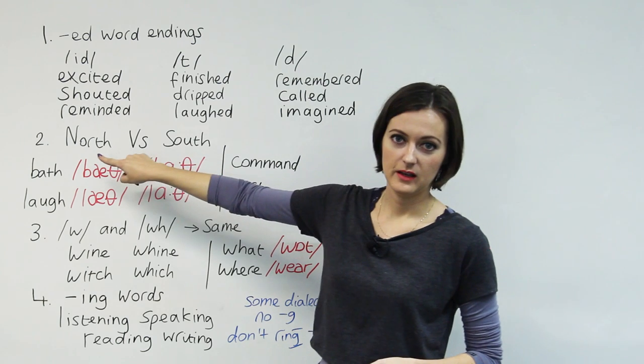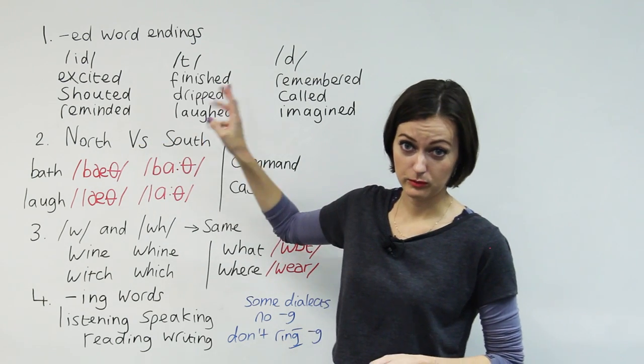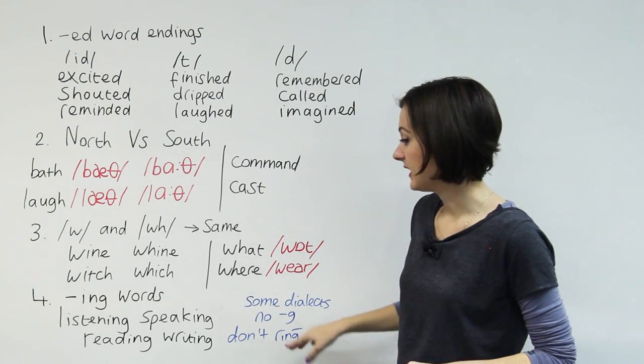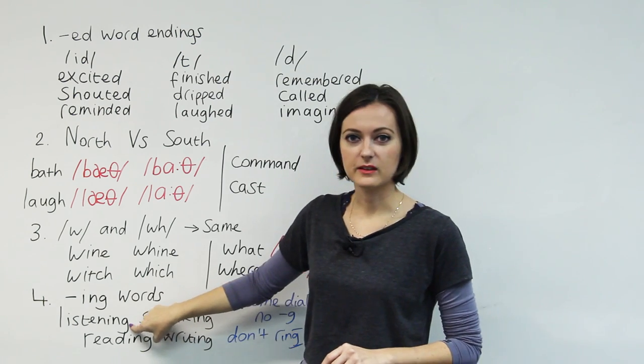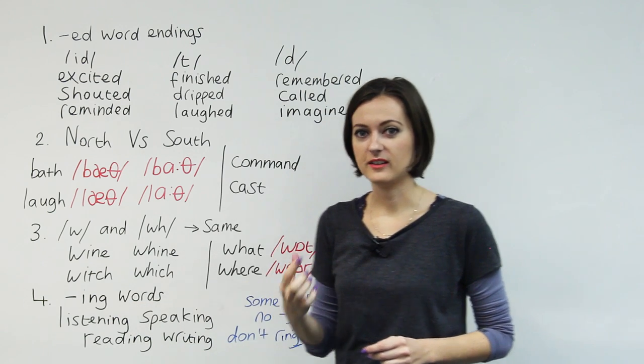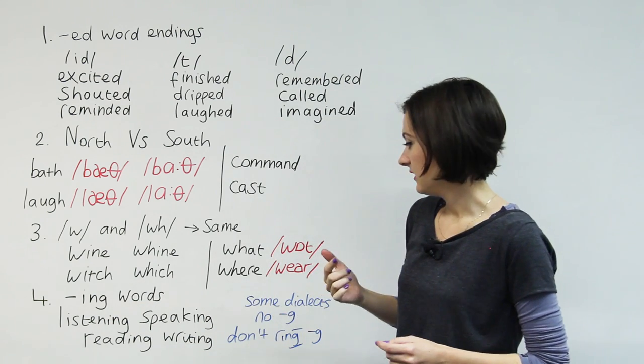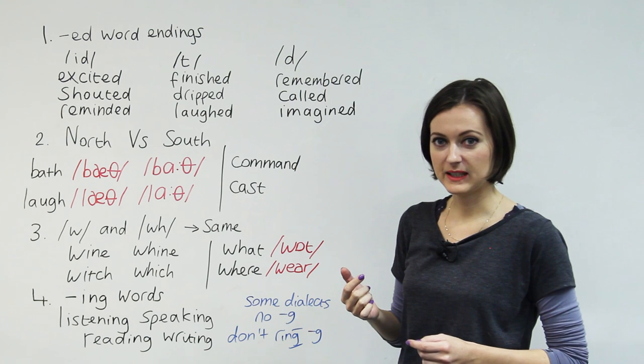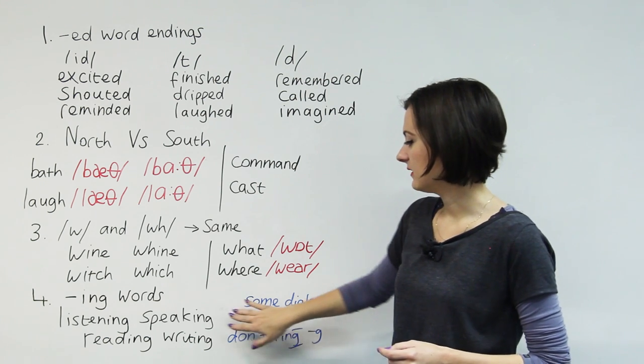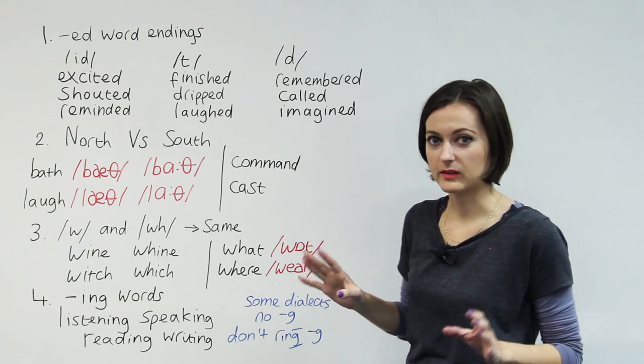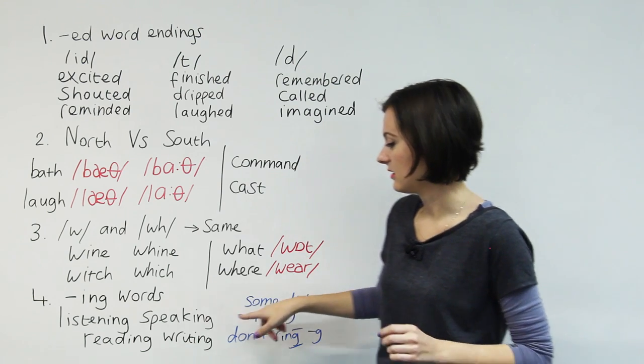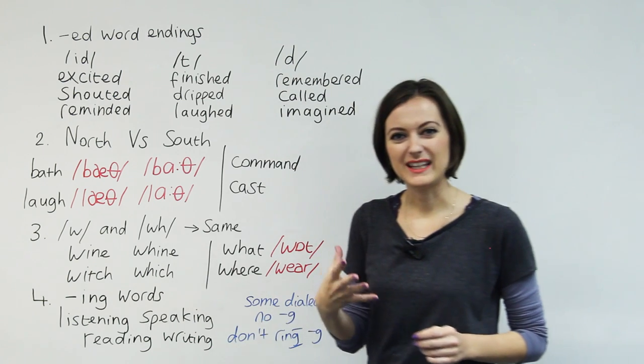Something to say about British English pronunciation is, again, this is a north-south difference, is that they, up there, some of the accents ring the G. So it's like listening, speaking. I was speaking to him. And if that's a feature of your accent, that's a feature of your accent.